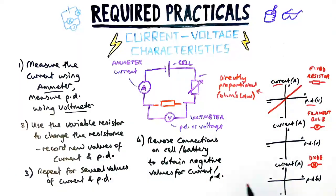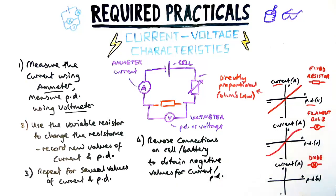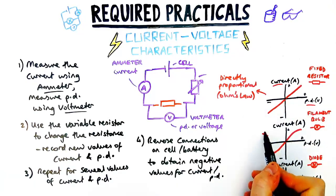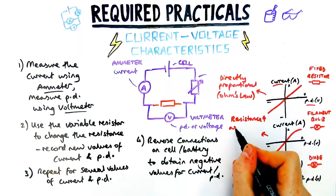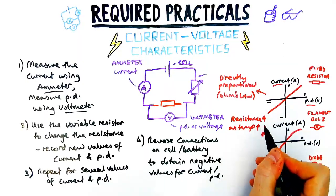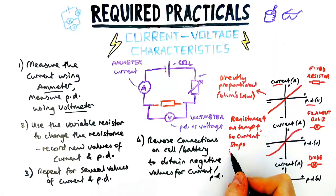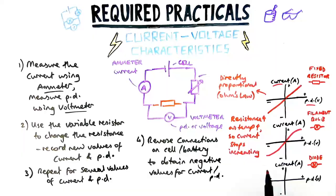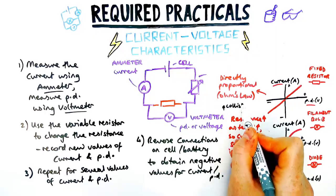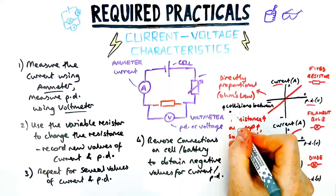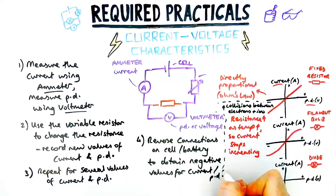For the filament bulb, it's not directly proportional. It curves off a bit at each end. The reason for this is because as the temperature increases for a bulb, resistance increases, so the current will stop increasing at a certain point. When ions are hotter, there are more collisions between electrons and ions, therefore resistance goes up and current stops increasing.